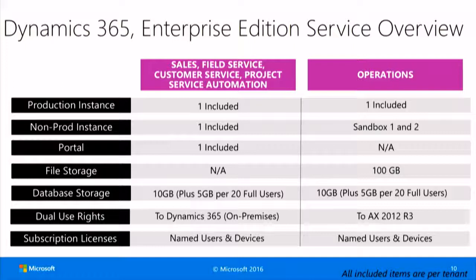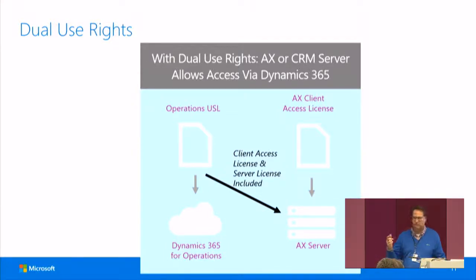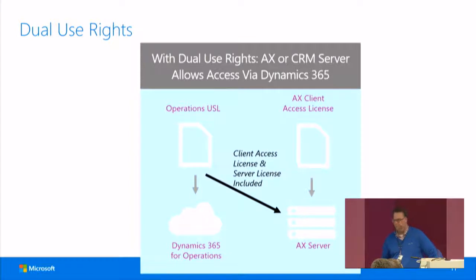With dual use rights, you are allowed to use AX 2012 R3 if you are buying Dynamics 365 for Operations — for whatever reason you want to do that. There is the possibility to step down into AX 2012 R3. It's a named user and a device subscription license model. You need the same number of client access licenses on the user license model, so you can't have additional 2012 users. But the AX server is included. You have to provide your own hardware and software if you want to run AX 2012 R3 under the Dynamics 365 license model.